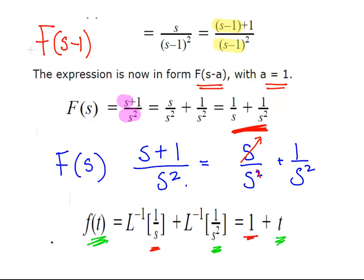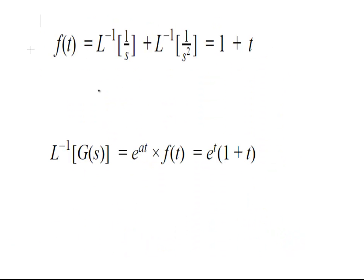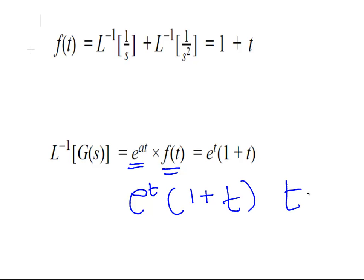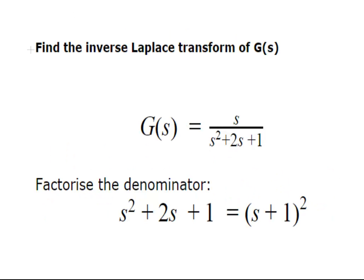Now, the inverse Laplace transform we are looking for is g of t, not f of t. Applying the shifting theorem, the answer is e to the at times f of t. With a equal to 1, that gives us g of t equals e to the t times 1 plus t, for t greater than or equal to zero. There are actually other techniques you could use to get the same result, and we will come to those shortly.